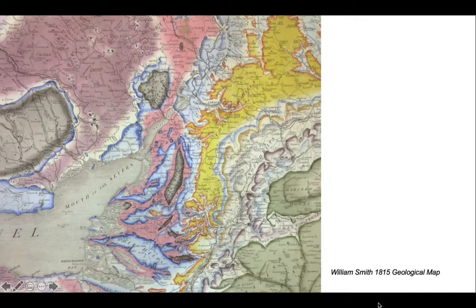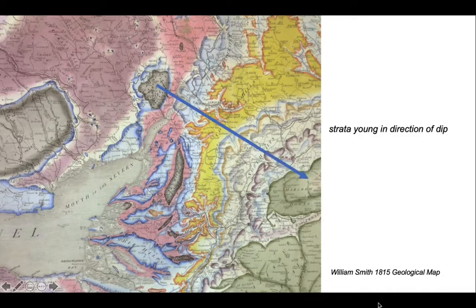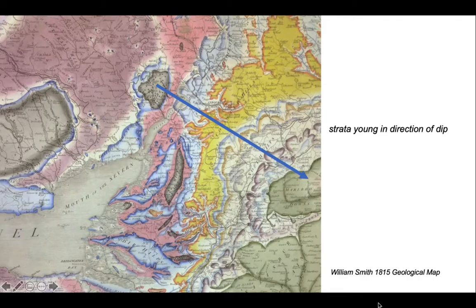This was recognised by Smith. Here's part of his map for part of western England. If you imagine going on a journey from the Forest of Dean to the Marlborough Downs in this direction, you go from coal measures in the Forest of Dean to younger chalk eventually in the Marlborough Downs at the arrowhead. So the strata young in the direction of dip. Smith was able to use this relationship to build up an idea of succession — a sequence of rocks that start with the oldest up to the younger rocks.